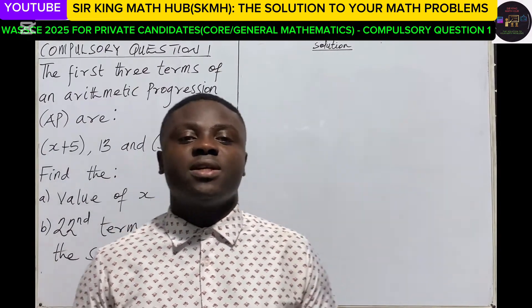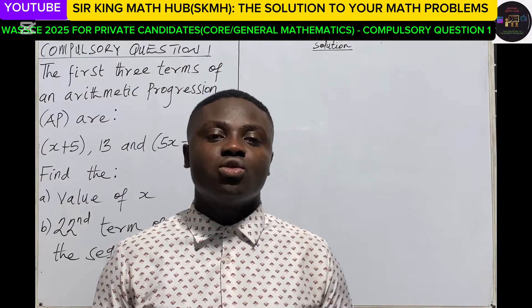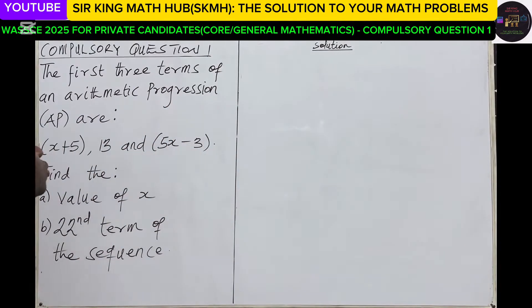Good day viewers, welcome to my channel Sir King Math Hub, the solution to your math problems. This is WASSCE 2025 for private candidates, compulsory question number one. The first three terms of an arithmetic progression are: x+5, 13, and 5x-3. Find the: a) value of x, b) 22nd term of the sequence.